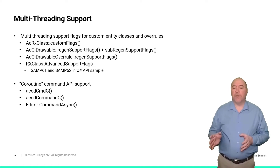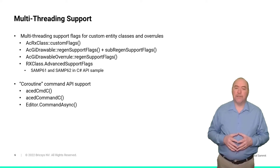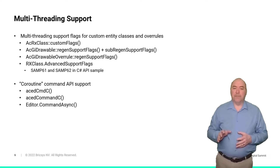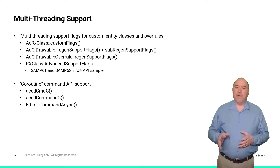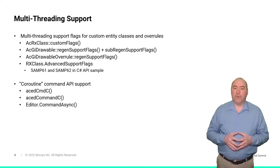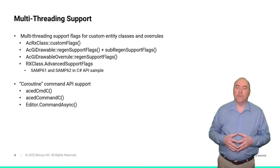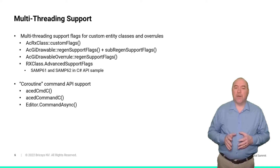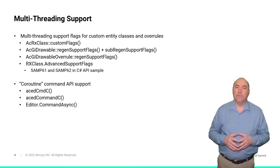What is really new in version 23 is that we now support not only per-class opt-in, but per-instance multithreading support for draw operations through the overridable sub-regen support flags function. The same mechanism is supported for drawable overrules, both native and managed, except that for overrules it is an opt-out mechanism, meaning that multithreaded operations are enabled by default in drawable overrules. There are two new commands added to our C# API sample that demonstrate the opt-out mechanism for drawable overrules: SAMP61 and SAMP62. Both commands just add and remove the drawable overrule.